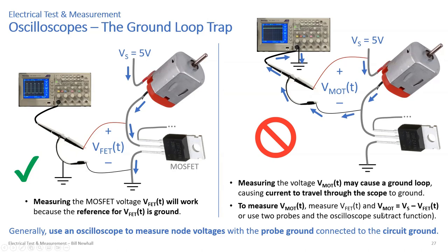Question: if you needed to measure the voltage across the motor, how would you connect it? I would connect one channel like on the first example to measure V_FET. You could simply say motor voltage equals five minus V_FET and compute that in MATLAB or Excel. But if you think the five volts is varying or isn't exactly five, connect a second probe between ground and five volts, then set up a trace on the oscilloscope doing V2 minus V1. That subtraction gives you the motor voltage on screen.